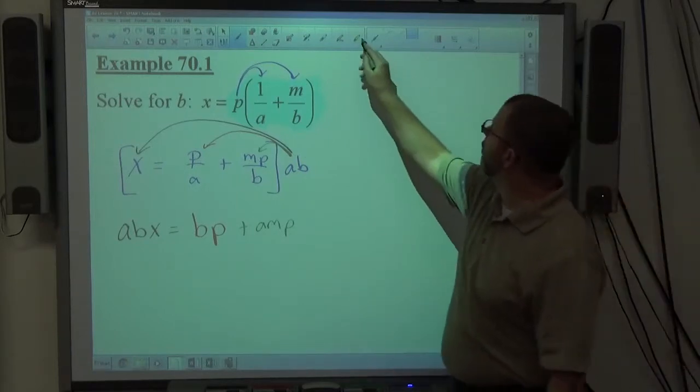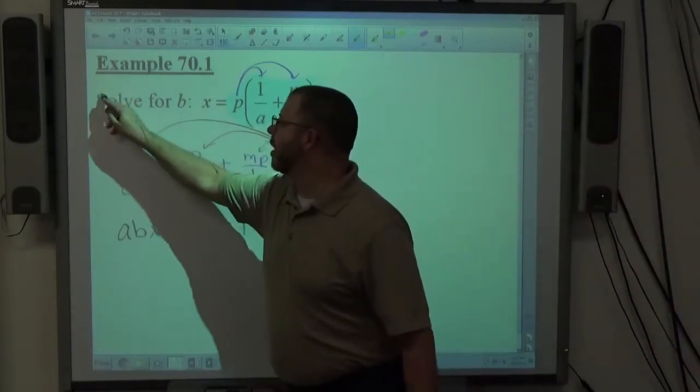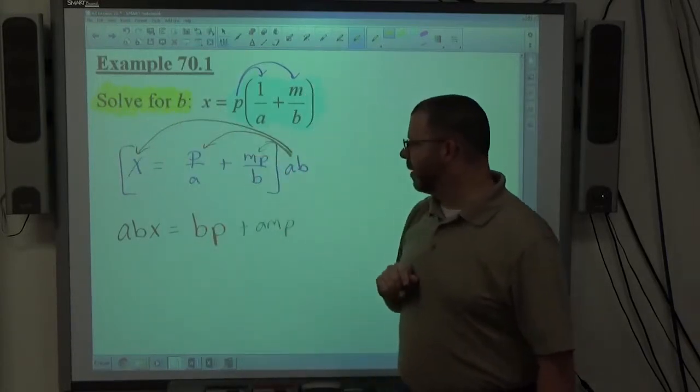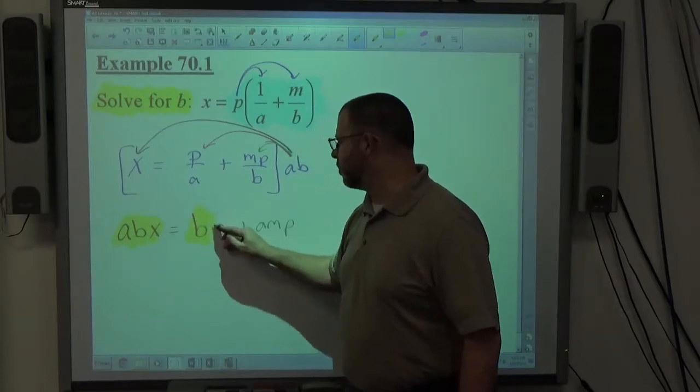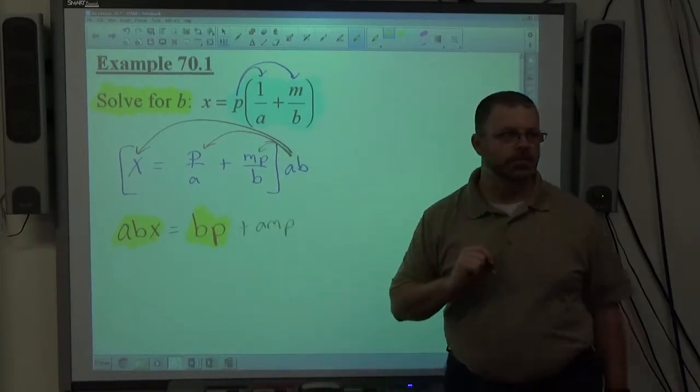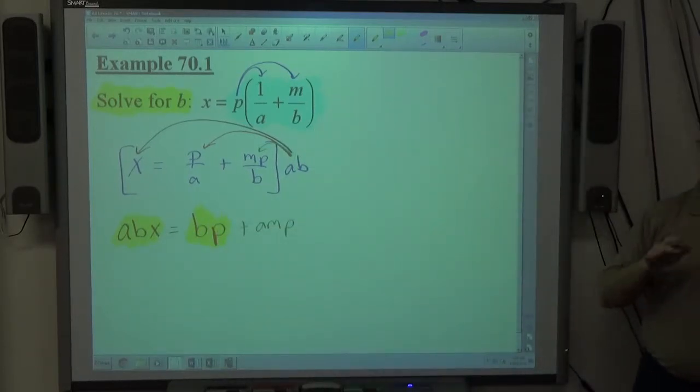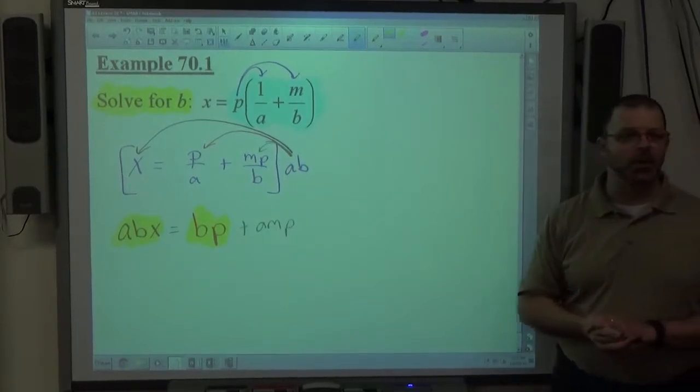Whatever it is you're trying to solve for is going to be more important than everything else. Solve for B. Everything containing B is more important. So ABX is more important, BP is more important, AMP isn't. So rearrange things so everything that's more important gets on one side, everything else on the other side. It doesn't matter which side's which.